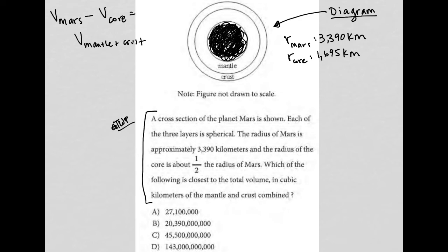So, let's figure out the volume of Mars and the volume of the core. And this should be a pretty straightforward question. The volume of any sphere, and this is provided to you so you don't have to memorize it, it's on the first page of the math section, it's four-thirds pi r cubed.